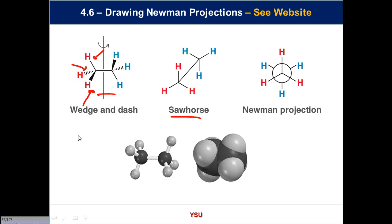Sawhorse depictions aren't used much—they've been overtaken by Newman projections. Turning the molecule on its side, you can see a CH3 group at the front and a CH3 at the back, giving an idea of the relative disposition of atoms on adjacent carbons. Turning it further on its end gives the Newman projection, developed at Ohio State by Melvin Newman. Every sophomore organic chemist across the planet knows who he is. The Newman projection lets us look at the molecule from the front, focusing on the angle between the red hydrogen here and the blue hydrogen there—what does that angle tell you about relative stability?